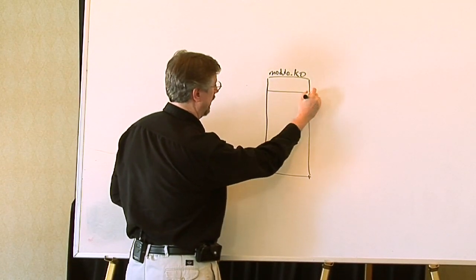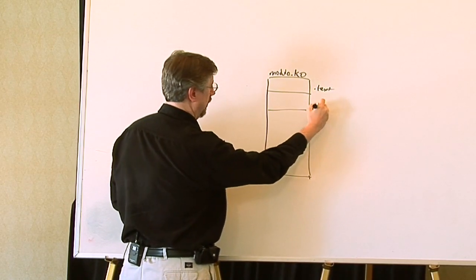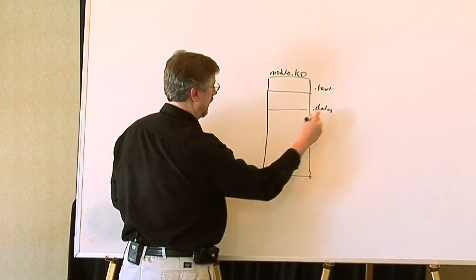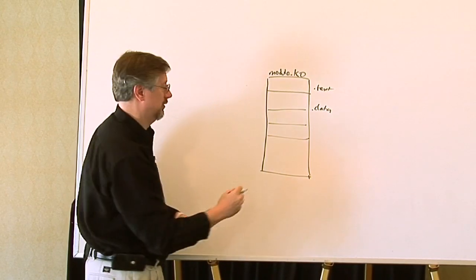So you have these different tables. There might be one called .text. You might have one called .data. And there's debug information if the debug information is included.